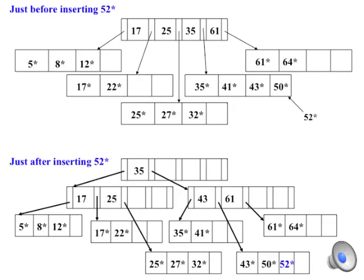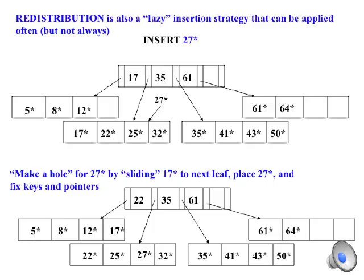The tree at the bottom is the result of inserting 52. Reflect on it if you need to. We'll switch topics modestly in the very next slide. In addition to the insertion strategies we've already discussed, insertions can often be done in a lazy fashion, sometimes known as redistribution. This slide shows the process of inserting a key and sliding values around and updating pointers as necessary to accommodate the addition of 27. Go ahead and reflect on it.